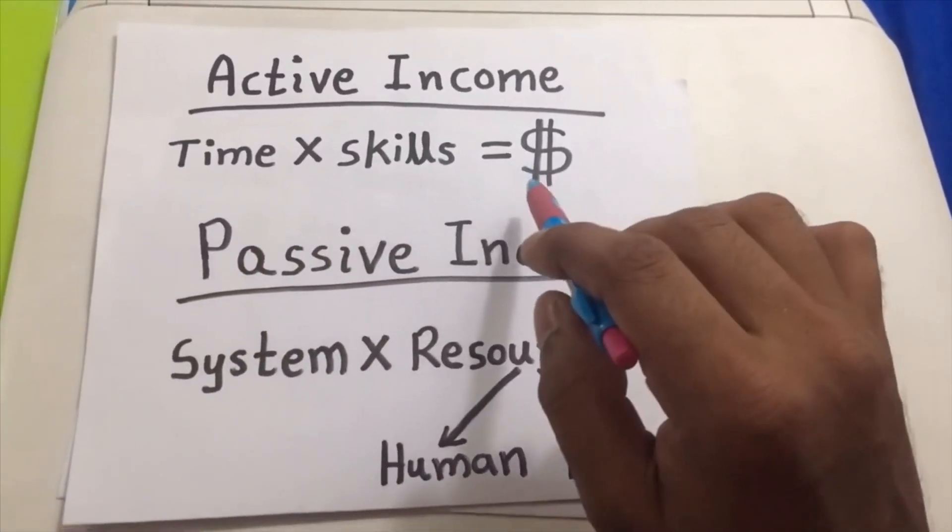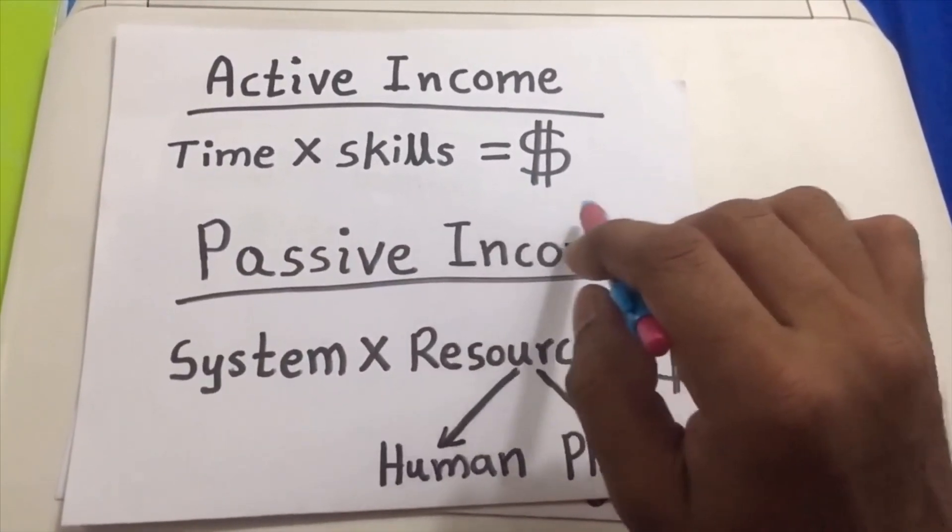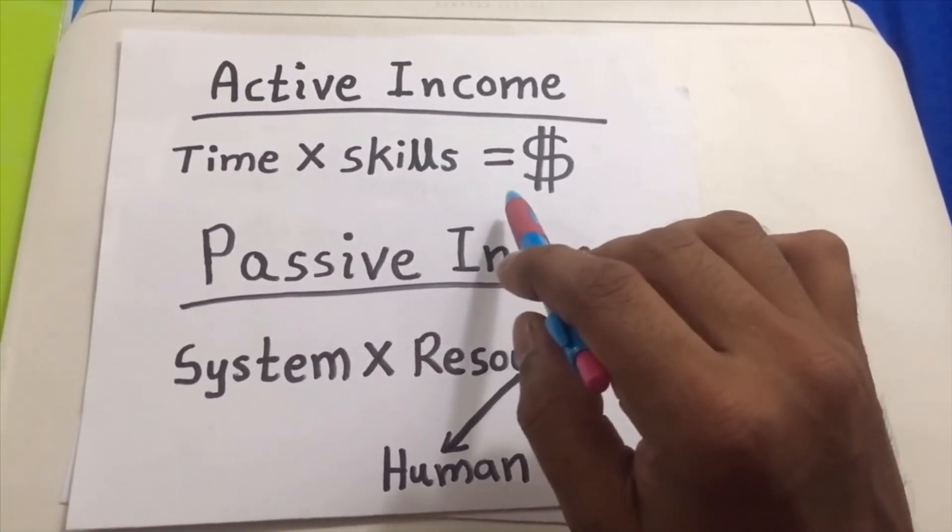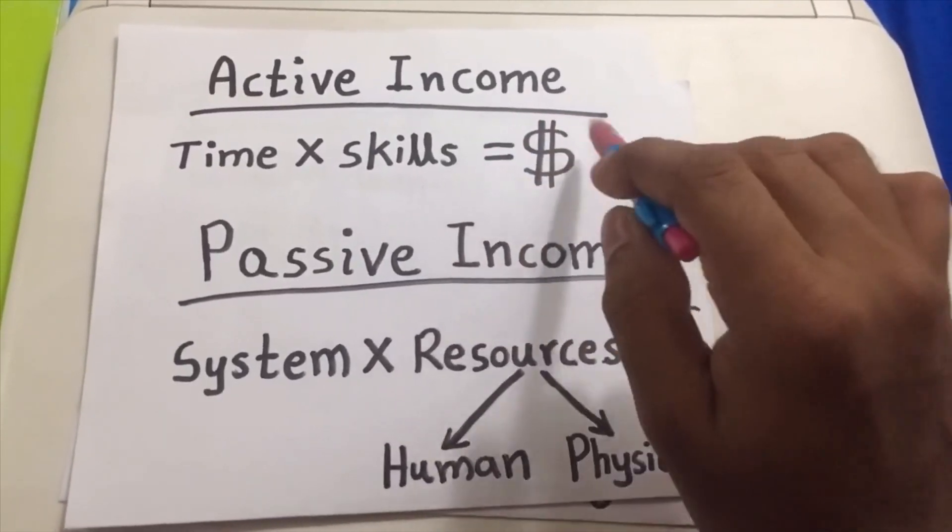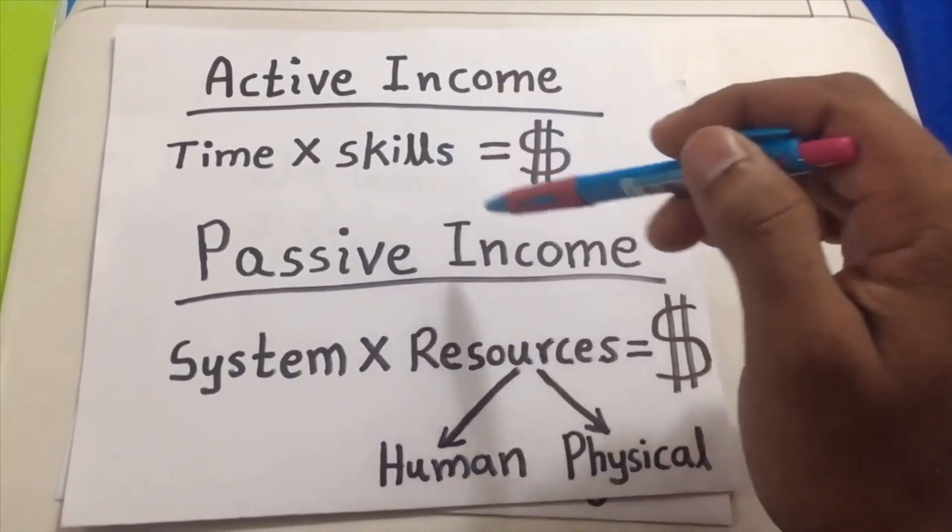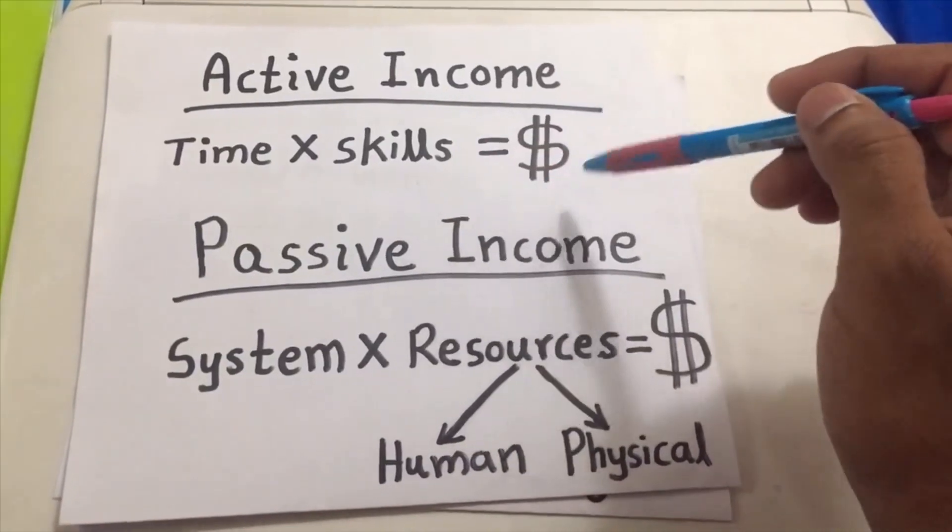There is a limit for that. Also for time there is a limit—you cannot work more than 24 hours. So this active income has a limit. You cannot increase this income to a range where you can earn millions and billions of US dollars.